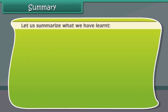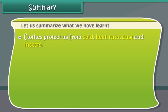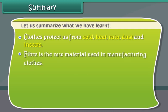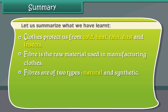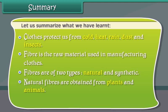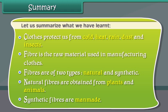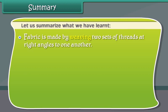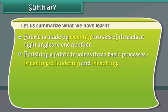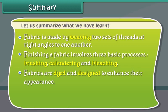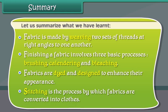Let us summarize what we have learned. Clothes protect us from cold, heat, rain, dust, and insects. Fiber is the raw material used in manufacturing clothes, and fibers are of two types: natural and synthetic. Natural fibers are obtained from plants and animals; synthetic fibers are man-made. Fabric is made by weaving two sets of threads at right angles. Finishing involves brushing, calendaring, and bleaching. Fabrics are dyed and designed to enhance appearance, and stitching is the process by which fabrics are converted into clothes.